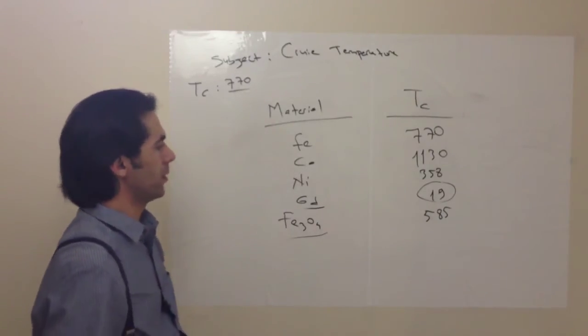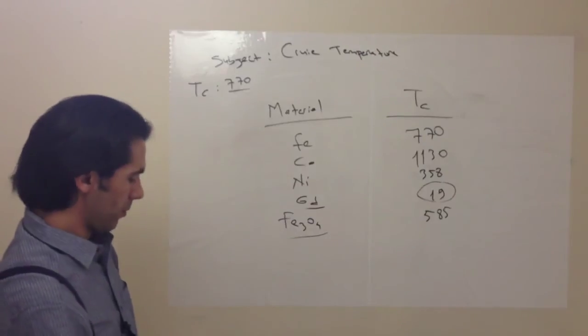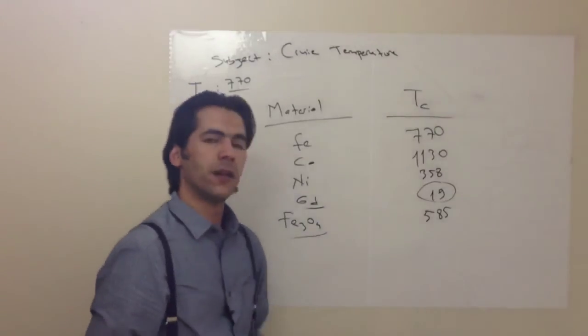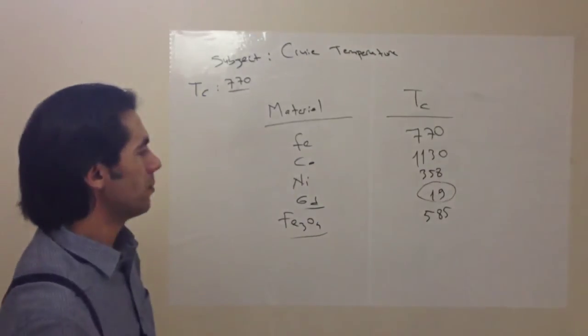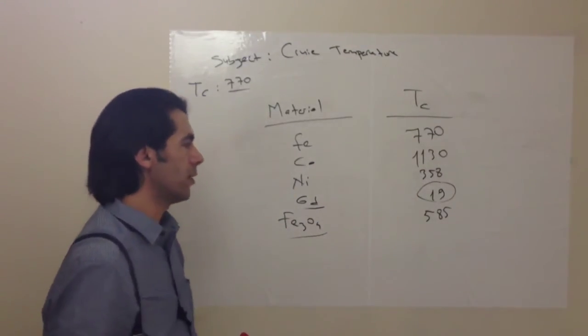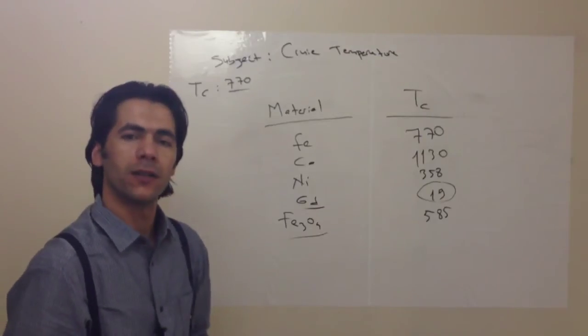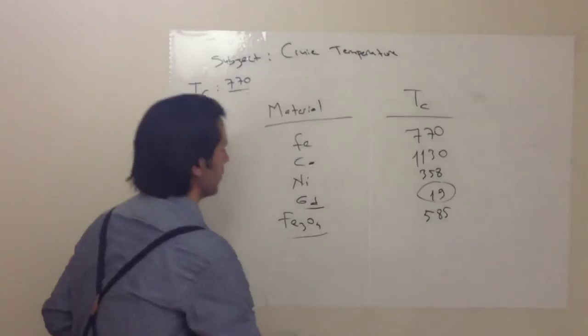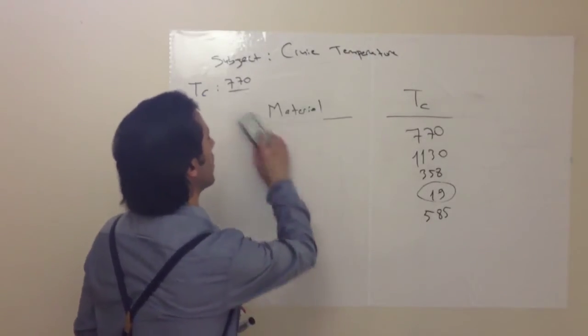For example, that might be interesting such as gadolinium. Its Curie temperature is 19 degrees. That means it's ferromagnetic in winter and paramagnetic in summer. So these are some elements or some chemical compounds.